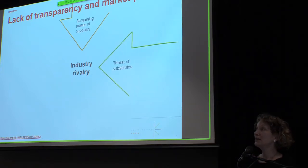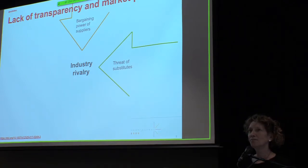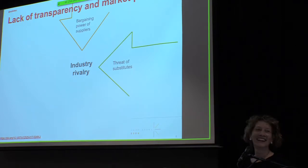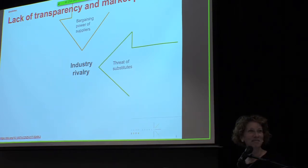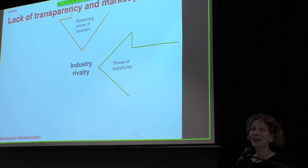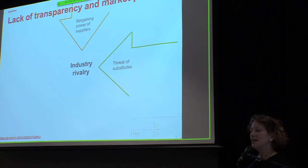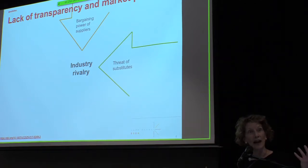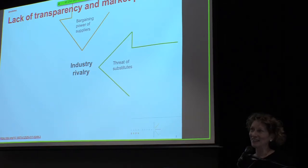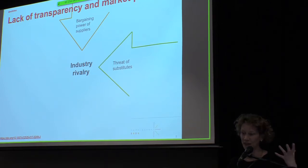The next market force is the threat of substitutes. What could be a substitute to subscriptions? You could consider Sci-Hub, academic social networks, or institutional repositories. We saw in the earlier graphic there's increasing availability via these alternative sources. But we're still not quite there to walk away completely from subscriptions, so there might be a little pressure — it's growing, but still not really strong right now.